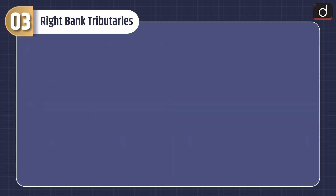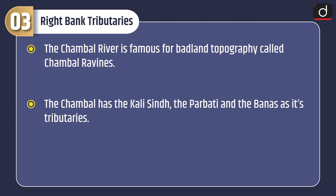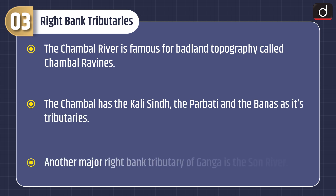The Chambal river is famous for badland topography called Chambal Ravines. The Chambal has the Kali Sindh, the Parbati, and the Banas as its tributaries. Another major right bank tributary of the Ganga is the Son river.